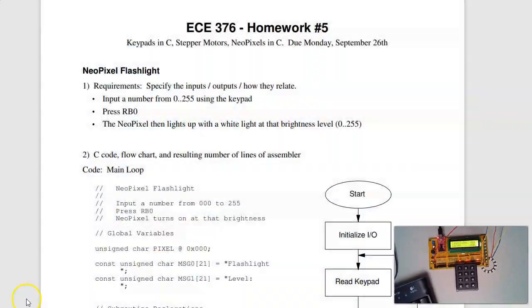So how do you do that? Well, the first part is to come up with the requirements. I want to input a number 0 to 255 on the keypad, then actually press the star button. I'm going to change that. Press the star button.